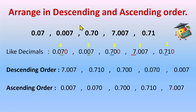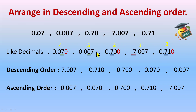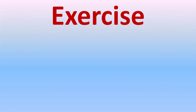So it's very easy. What you need to do is: first, make the decimal numbers like decimals if they aren't already. Then start comparing the whole part first, regardless of whether you're doing ascending or descending order. Next, move to the tenth place — for descending order, write the greatest first; for ascending, write the smallest first. Then compare the hundredth place, and you'll be able to write the order easily.